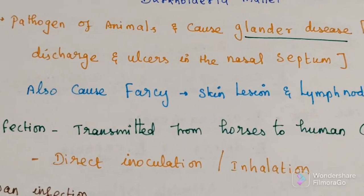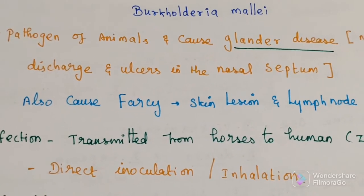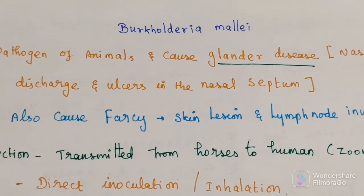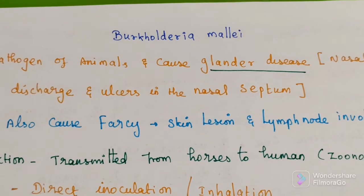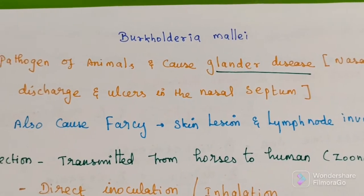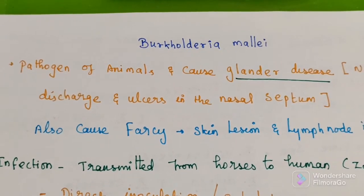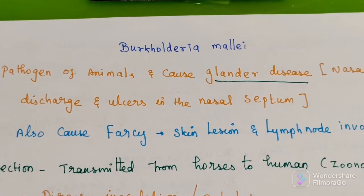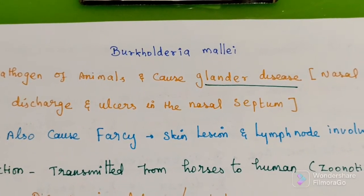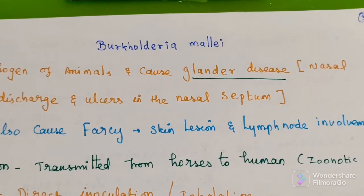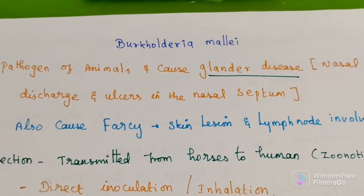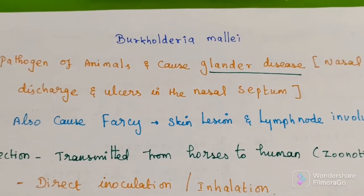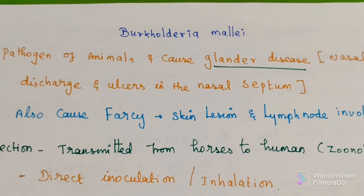The second species is Burkholderia mallei. The disease it causes is called Glanders, which mainly occurs in animals such as donkeys and horses. It is generally a pathogen of animals and causes Glanders disease, which may present with nasal discharge and ulcers in the nasal septum.